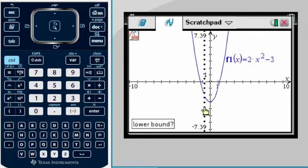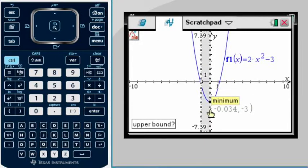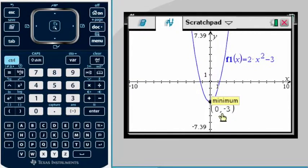It's asking me for a lower bound. It doesn't matter how far or close to the minimum point you start from, as long as you start before and then you pass it with your upper bound or the end of the box. Right here I know that this zero comma negative three will be my minimum point.